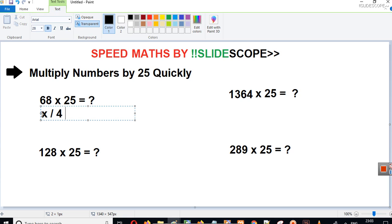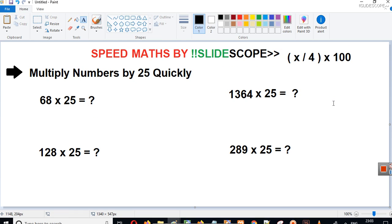Suppose x is the number, so you divide x by 4 and then you multiply it, whatever you will get here, you have to multiply it by 100. So this is a simple formula here. We can do this in mind, right?